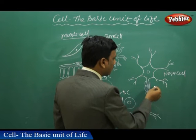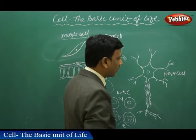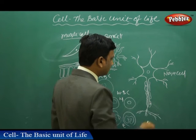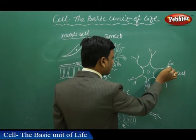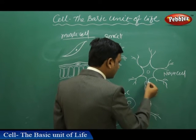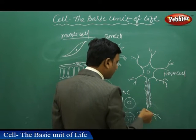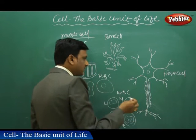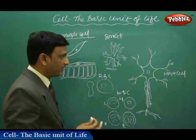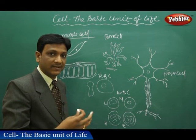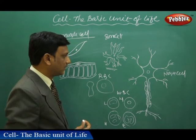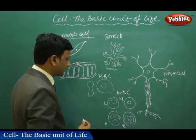This narrow cell is called a neuron. It has a cell body and so many dendrites. And this part is called the axon, which connects to different kinds of nerve cells to form a very big network of nerve cells.